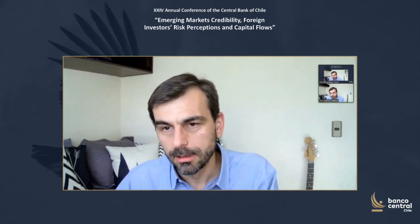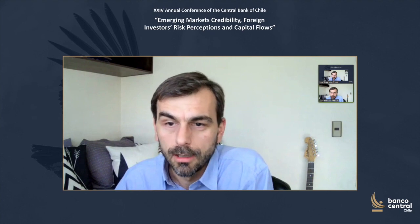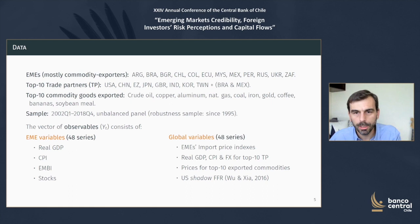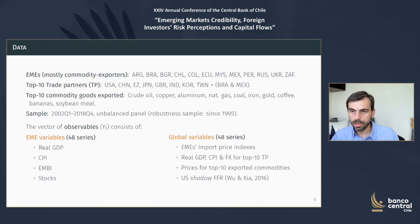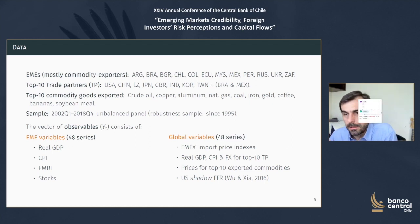For simplicity, we organize our data — the Yt vector of observables in the dynamic factor model — into two groups. A set of what we call EME variables that includes data on GDP, CPI, MBs, spreads, and a major stock market index for each of the 12 EMEs in the sample — 48 series in total. And a set of global variables that includes these EMEs' most relevant external variables: the EMEs' import price indexes, GDP, CPI, and exchange rate of the top trade partners, global prices of the top commodities exported, and an estimation of the US shadow federal funds rate. If we consider both groups, we end up including 20 GDP series that account for about 80% of the world's GDP.